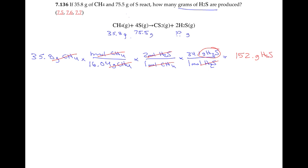What we did in that dimensional analysis is we said: we have 35.8 grams of methane and basically all the sulfur in the universe at our disposal. So if I had 35.8 grams of methane and as much sulfur as I wanted, I would end up with 152 grams of hydrogen sulfide. But we don't have all the sulfur in the universe — we actually have 75.5 grams.